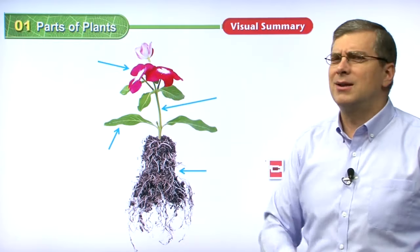Did you know that we use some roots to make sugar? Some plants — we use the roots for many different things: carrots, onions, things like that. But also some plants we can use to make sugar. That's really good and delicious.